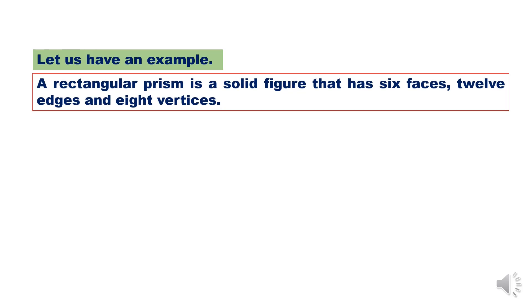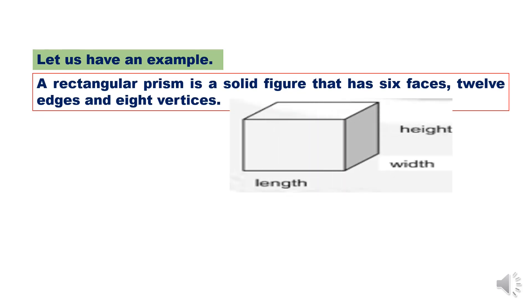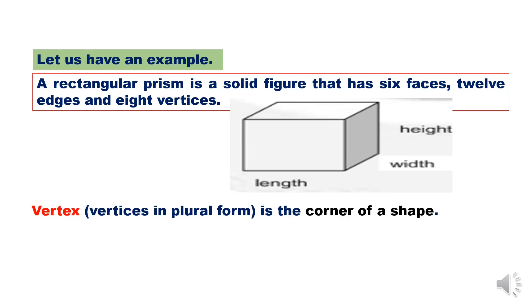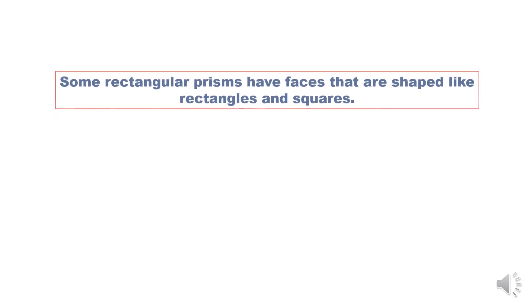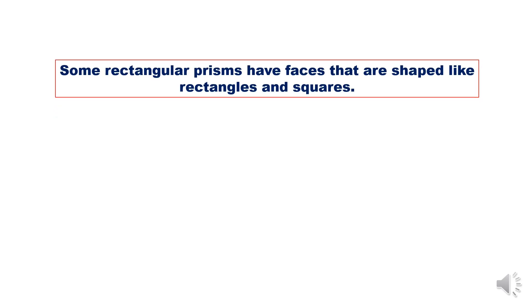Let us have an example. A rectangular prism is a solid figure that has 6 faces, 12 edges, and 8 vertices. Vertex, or vertices in plural form, is the corner of a shape. An edge is a segment where two faces of a prism meet. Some rectangular prisms have faces that are shaped like rectangles and squares.